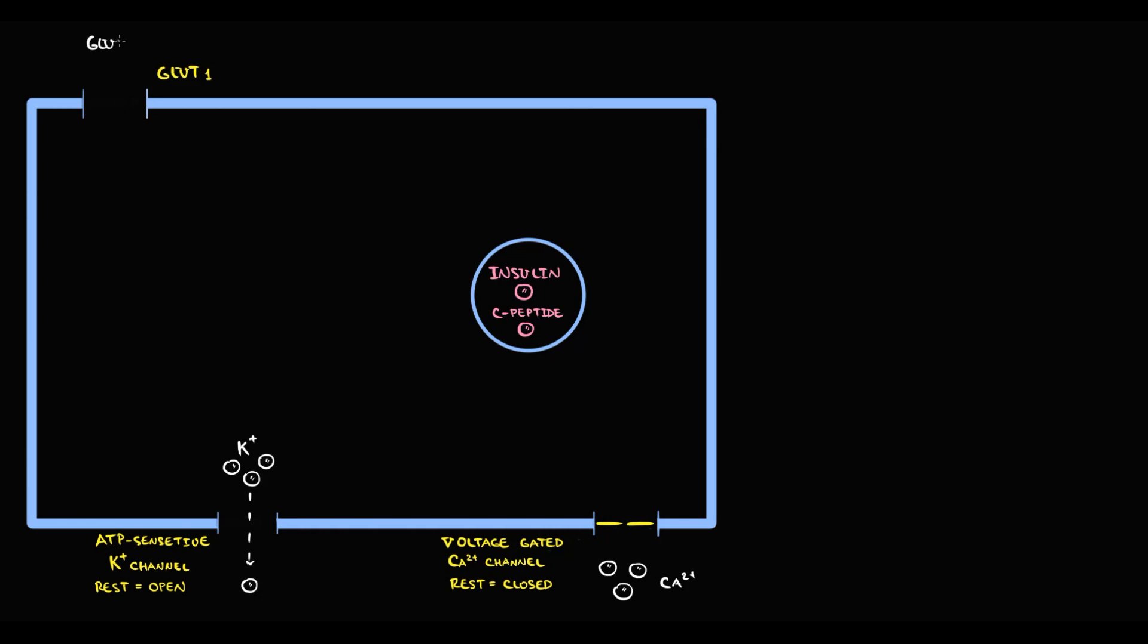When glucose enters into the beta cell, glucose undergoes phosphorylation by glucokinase to glucose-6-phosphate. Glucose-6-phosphate undergoes glycolysis, with subsequent degradation in Krebs cycle and electron transport chain, that results in production of ATP molecules.